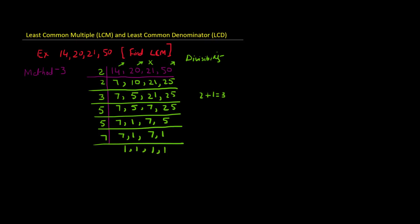So now we multiply all the divisors used: the LCM equals 2 × 2 × 3 × 5 × 5 × 7. Calculating: 2×2=4, 4×3=12, 12×5=60, 60×5=300, 300×7=2100.